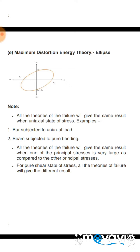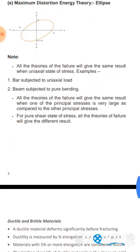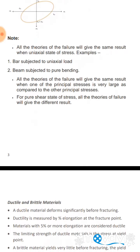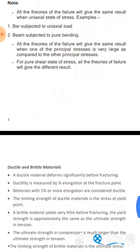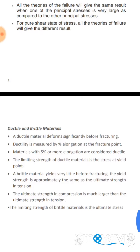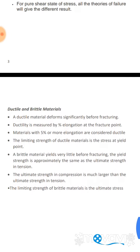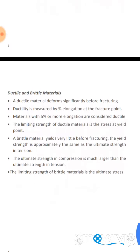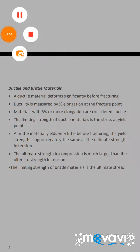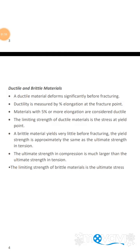For a pure shear state of stress, all the theories of failure will give different results. Regarding ductile and brittle materials: a ductile material deforms significantly before fracturing. Ductility is measured by percent elongation at the fracture point. Materials with 5% or more elongation are considered ductile.